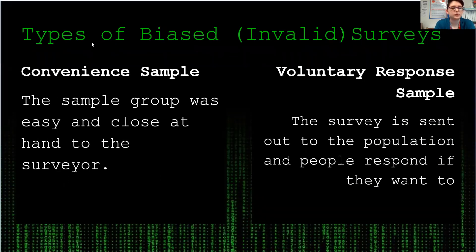Now for biased or invalid surveys. The first type is a convenience sample. This is when the sample group was easy and close at hand to the surveyor. For example, if I only survey my family members, that's a convenience sample and it's probably not representative of every different type of view in the whole population.